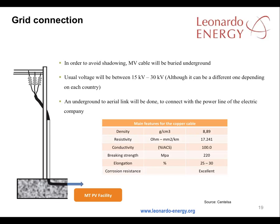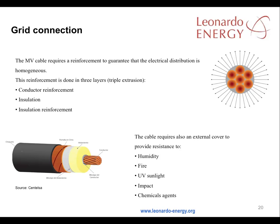An underground to aerial link can be made to connect the plant to the electricity company's power lines. The medium voltage cable requires reinforcement to guarantee that the electrical distribution is homogenous. The reinforcement is in three layers: conductor reinforcement, insulation, and insulation reinforcement. The cable also requires an external cover to provide resistance against humidity, fire, ultraviolet, sunlight impacts, and chemical agents.